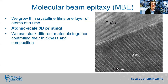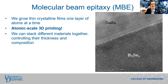In my lab, we use a technique called molecular beam epitaxy, or MBE, to grow thin films of new materials atom by atom. In this technique, we deposit one layer of atoms, then the next layer of atoms, then the next layer of atoms, and so on, to build an entire film. You can think of this as atomic scale 3D printing. In 3D printing, you're building your structure up one layer at a time. In MBE, we're doing the exact same thing, except our layers are atomic scale.